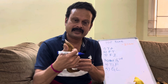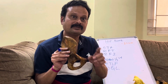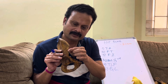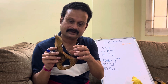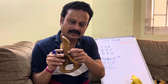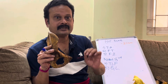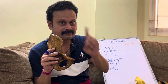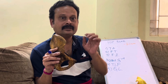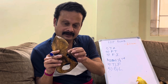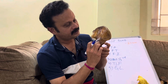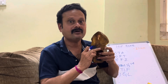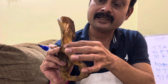Coming to the anterior end: the anterior superior iliac spine gives attachment to the sartorius muscle, along with the upper half of the notch below it. The anterior inferior iliac spine gives origin to the straight head of rectus femoris and attachment to the iliofemoral ligament. Rectus femoris has a second head — the reflected head — which takes origin just above the groove above the acetabulum, whereas the straight head originates from the anterior inferior iliac spine.